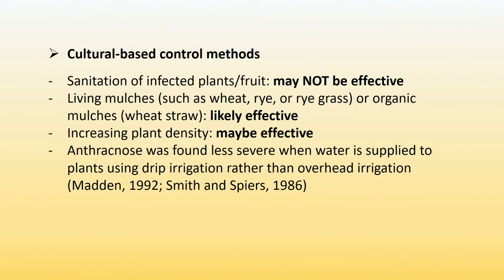Living mulches or organic mulches are likely effective. Increasing plant density may also be effective — with increased plant density, it reduces the amount of water that penetrates the plant canopy, thus reducing the overall amount of rain splash.